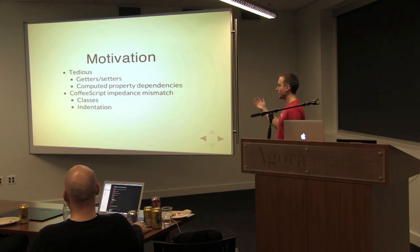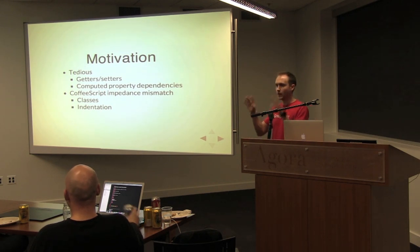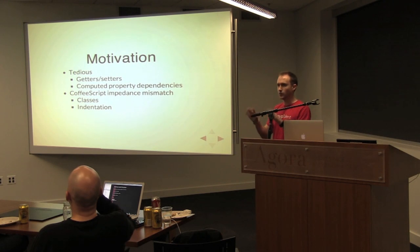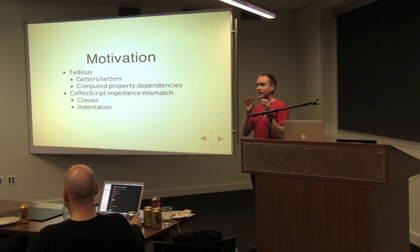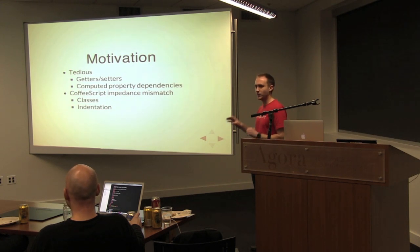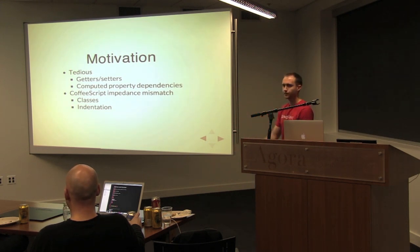And computed properties — when I define my computed properties, I have a method body and I access other properties. At the end of the computed property definition, I go back and I explicitly indicate which properties it depends on, which is really redundant. It's actually the properties I just put in the method body, in most cases.